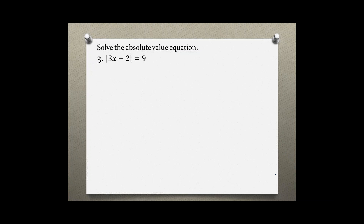Solve the absolute value equation, problem number three: the absolute value of 3x minus 2 equals 9. We get two different versions of this equation. The first version is 3x minus 2 equals negative 9, and the second version is 3x minus 2 equals positive 9.